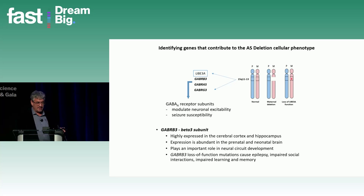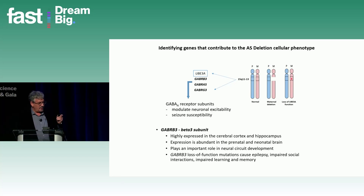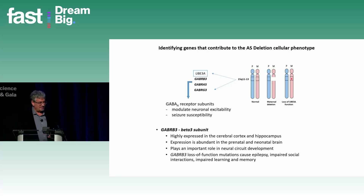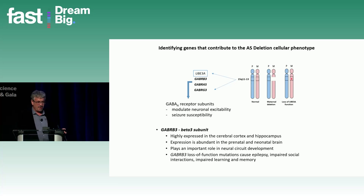GABA-beta-3 is abundantly expressed during development and plays an important role in neural development as well as inhibitory transmission throughout life. Interestingly, GABA-beta-3 loss-of-function mutations also cause an interesting phenotype, and Dr. Zhang was actually one of the first to generate a mouse with this mutation before working on the UBE3A mutation mice, making it a very interesting candidate.